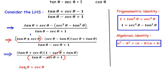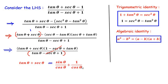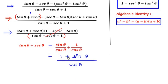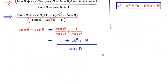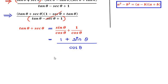Now tan θ can be written as sin θ / cos θ, and sec θ can be written as 1 / cos θ. Since the denominators are the same, we combine the numerators and write (1 + sin θ) / cos θ. This equals the RHS, so LHS = RHS, which is proved.